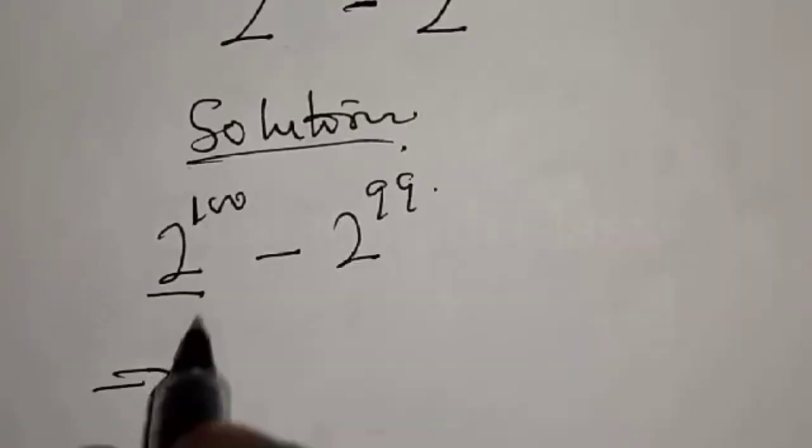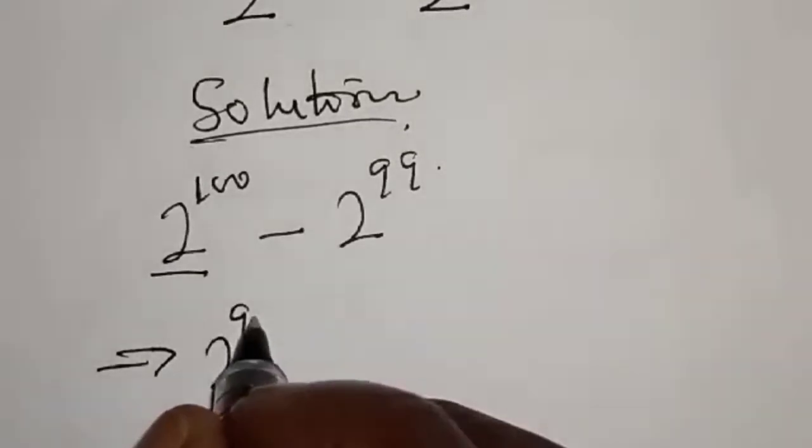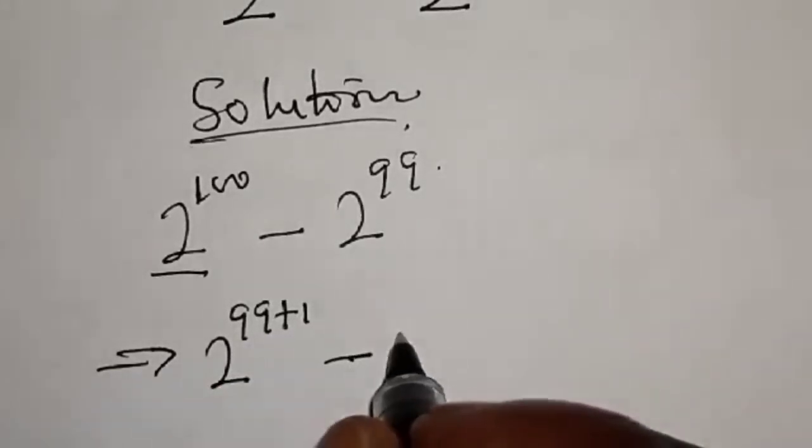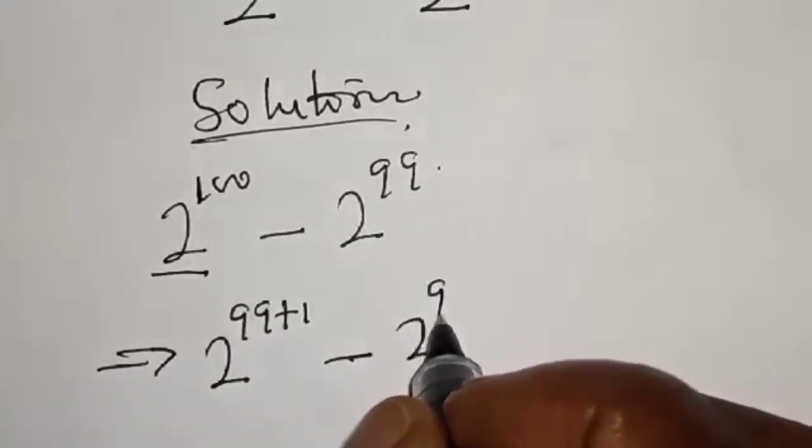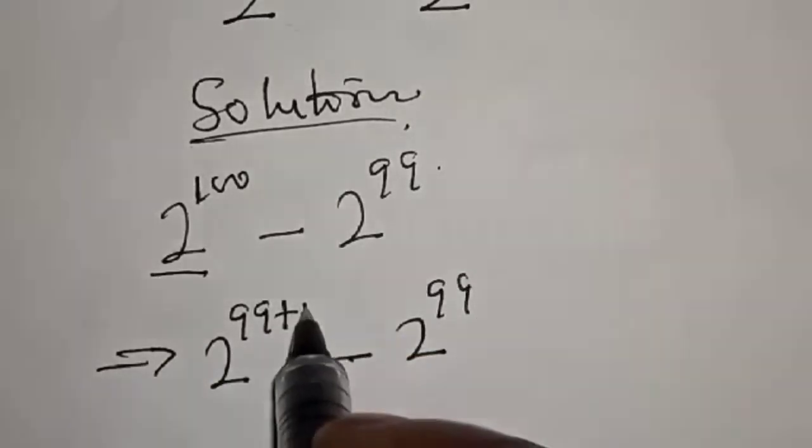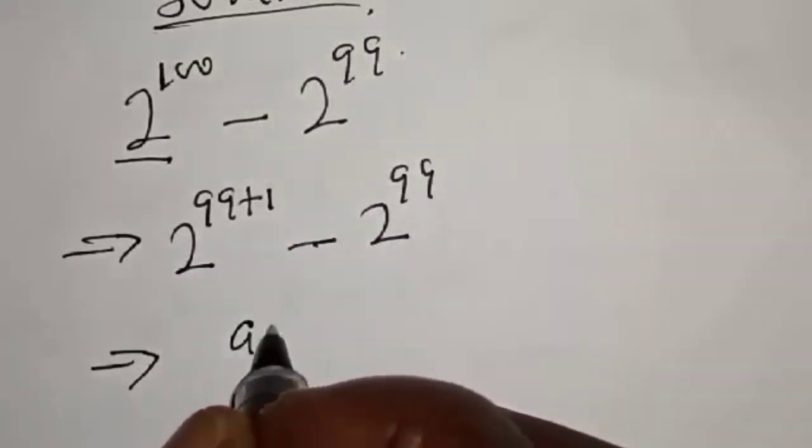100 can be written as 2 raised to power 99 plus 1, then minus 2 raised to power 99. We know that 99 plus 1 is equal to 100.